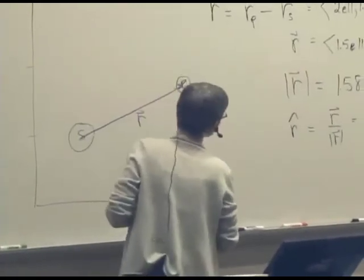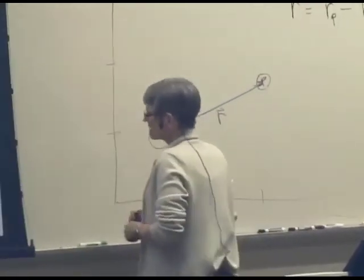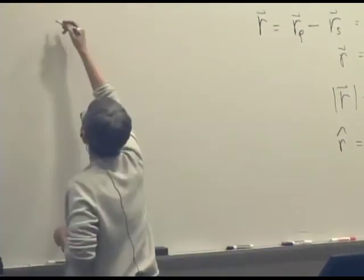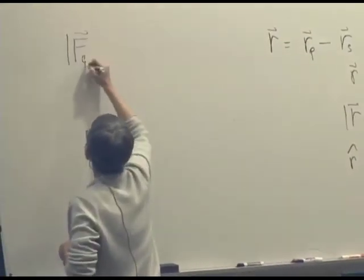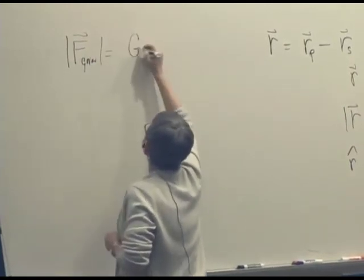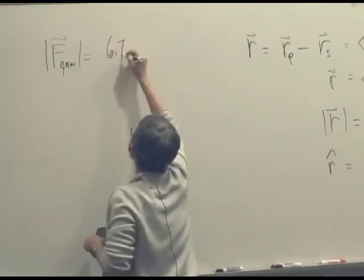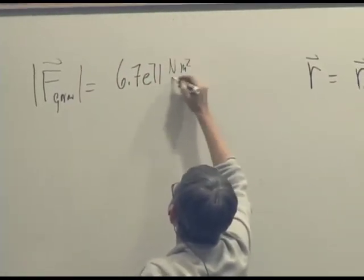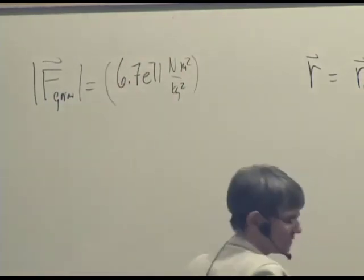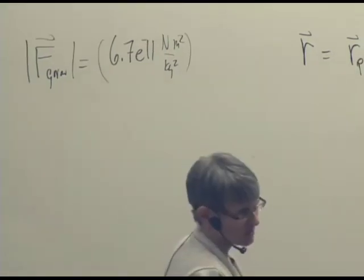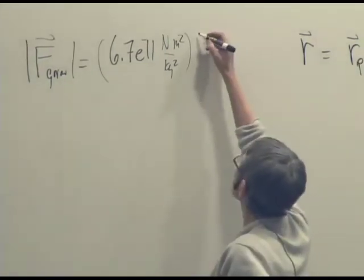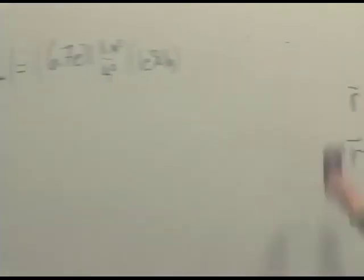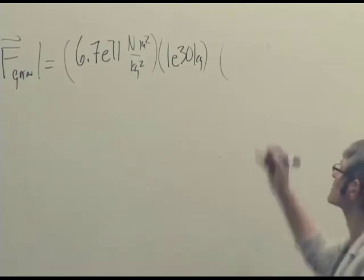So let's just go ahead and calculate the force, shall we? So we want the magnitude, which is going to be G, so it's going to be 6.7 times 10 to the negative 11 Newton meters squared per kilogram squared times the masses. What's the mass? We need masses. Okay, so the star's mass is 10 to the 30th kilograms. And the planet's mass is smaller, it's 5 times 10 to the 24th.